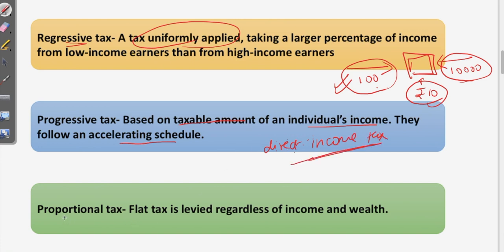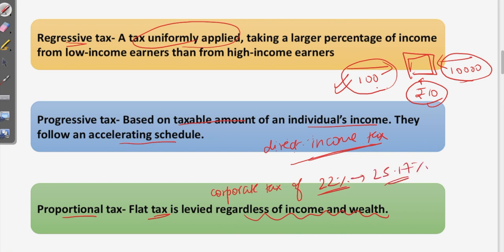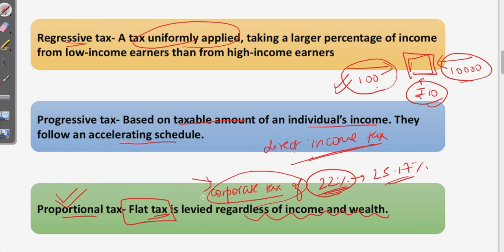The next type is proportional tax, also called flat tax, which is levied regardless of income and wealth. An example is corporate tax, earlier at 30% and now at 22%, with an effective rate of 25.17%. This corporate tax rate of 22% is applicable to all companies, making it a flat and proportional tax.